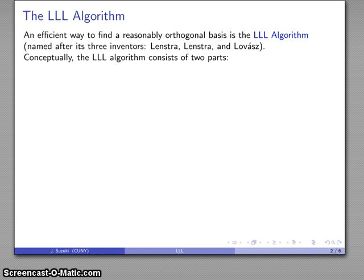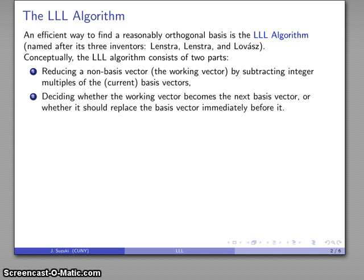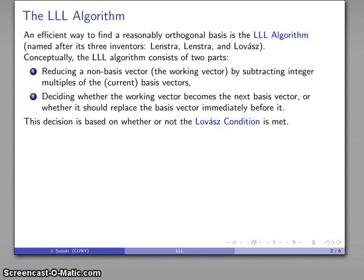Conceptually, the algorithm consists of two parts. First, we're going to reduce a non-basis vector — our working vector — by subtracting integer multiples of our current basis vectors. Then we have to decide whether the working vector is going to be the next basis vector, or whether it should replace the basis vector immediately before it. The decision of whether or not to replace a basis vector is based on the Lovász condition.